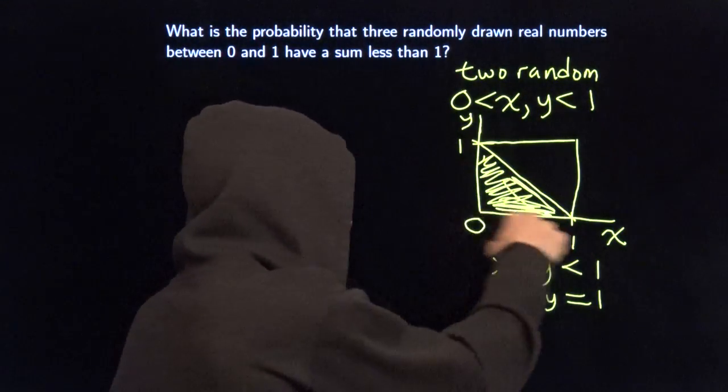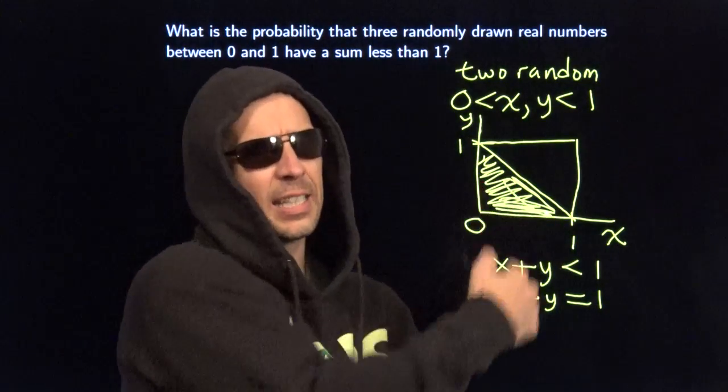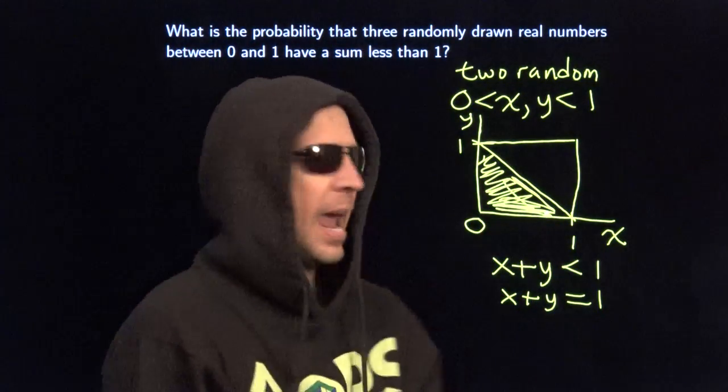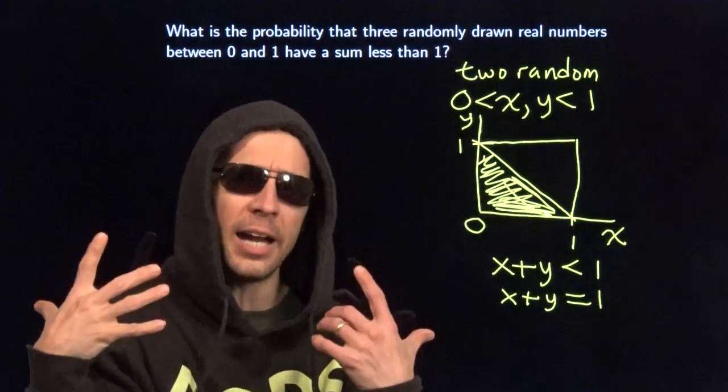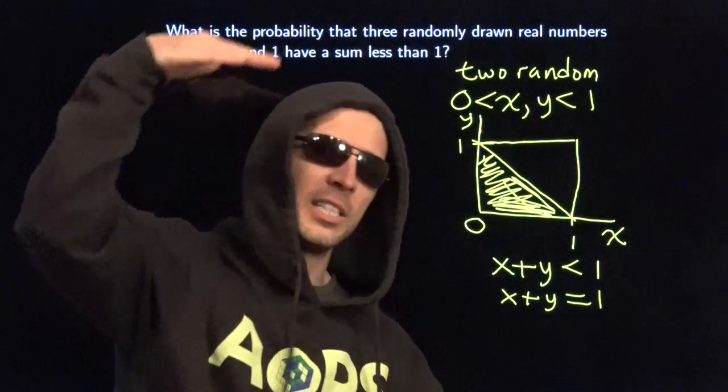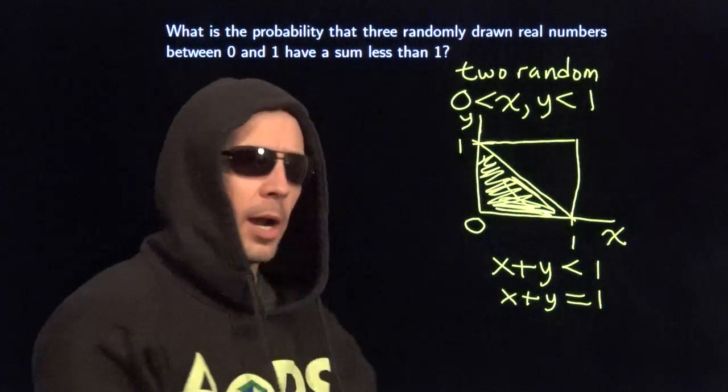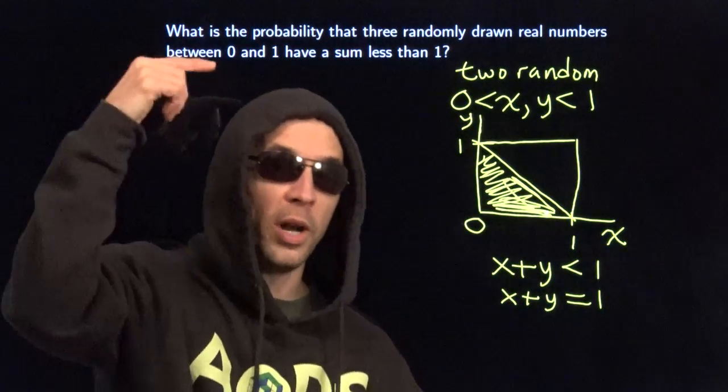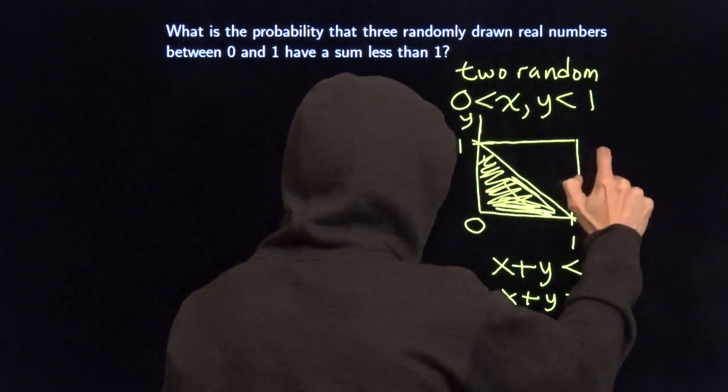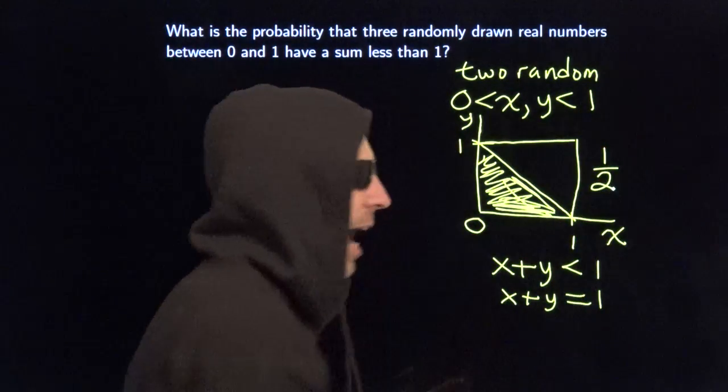So our desired region is this little triangle right here. This right triangle with legs of length one. Its area is one times one. You take half of that. You get one half. That's our desired region area. Take our desired area. Divide by our possible area. That's the whole square. You get one half. Because one half divided by one is one half. So the probability over here is a half.